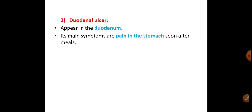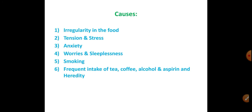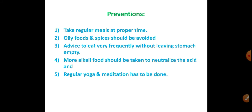Causes of ulcer are similar to hyperacidity: irregularity in food, tension, stress, anxiety, worries, sleeplessness, smoking, frequent intake of tea and coffee, alcohol, aspirin, and hereditary factors. Prevention includes taking regular meals at proper time, avoiding oily and spicy food, eating frequently without leaving the stomach empty, taking more alkali food to neutralize acidity, and doing regular yoga and meditation to increase oxygen levels in the body.